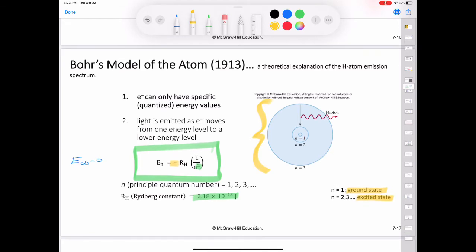The radius of each circular orbit in Bohr's model depends on n squared. Thus, as n increases from 1 to 2 to 3 and so on, the orbit radius increases very rapidly. The higher the excited state, the further away the electron is from the nucleus, and the less tightly it is held by the nucleus.